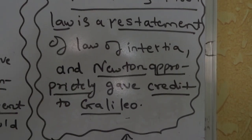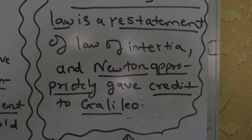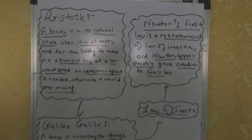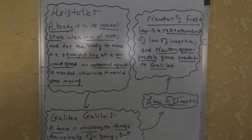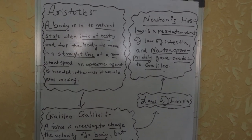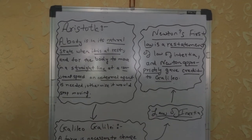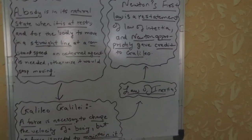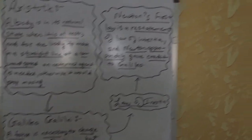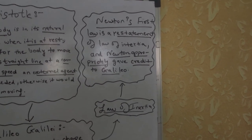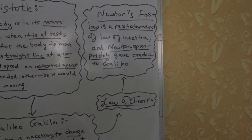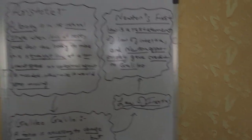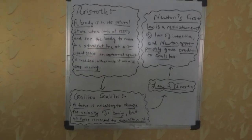Newton's First Law came as a restatement of the law of inertia, and Newton appropriately gave credit to Galileo. So basically, the history goes: Aristotle's view, then Galileo Galilei's law of inertia, and Newton's First Law is a restatement of that.